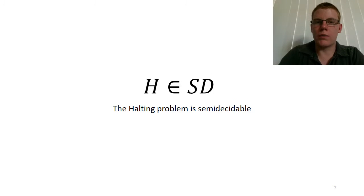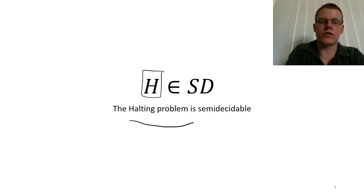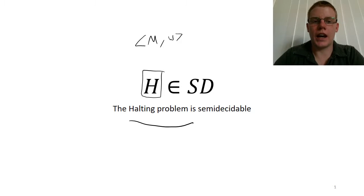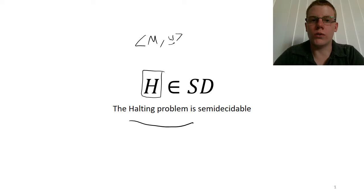Today we're going to talk about probably one of the most famous language problems in computer science: the halting problem. That problem is a language which consists of strings that are the encoding of a Turing machine and an input to that Turing machine, such that a string is in the language H if and only if when the machine is run with the string, it halts.